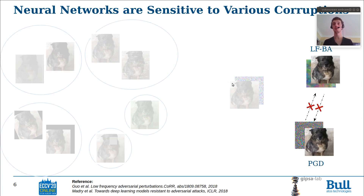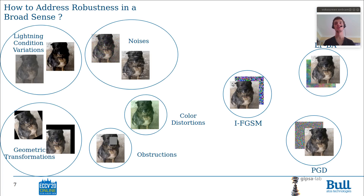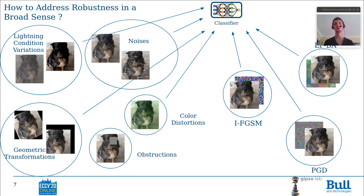And this is also true for adversarial examples. Being robust to one kind of adversarial examples, in general, doesn't imply being robust to another kind of adversarial examples. Which means that addressing the robustness in a broad sense is really difficult because it is hard to imagine a method that could help the neural network to be more robust to such a wide range of corruptions that are all independent from each other.